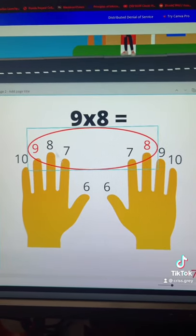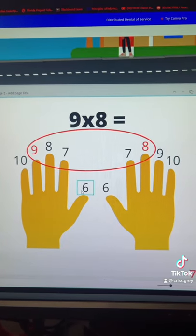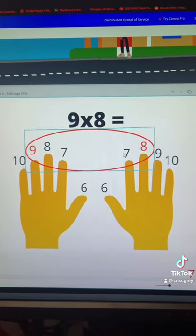Next you're going to count the fingers that are within the circle. We have one, two, three, four, five, six, seven.